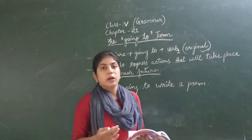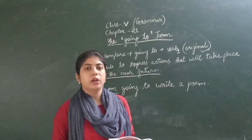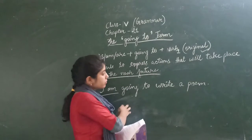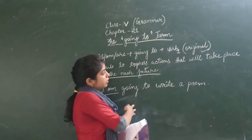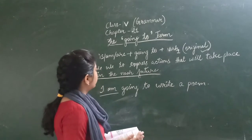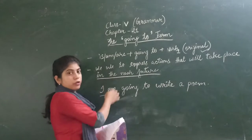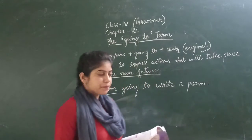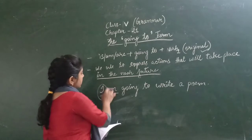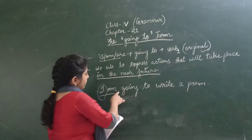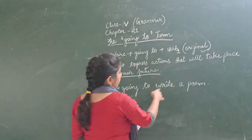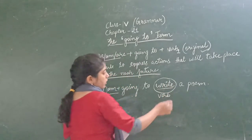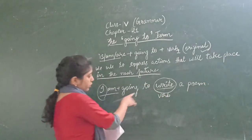Here I am not using the future tense. You have learned that we use will and shall in the future tense. But in the going to form, this is used for events that take place very soon — in the near future, with a kind of surety. So with the subject I, we use am, then going to, and write — which is the original form of the verb. So: I am going to write a poem.